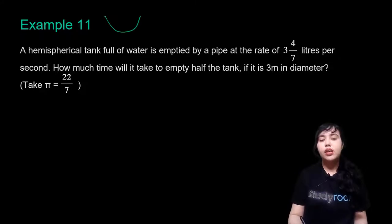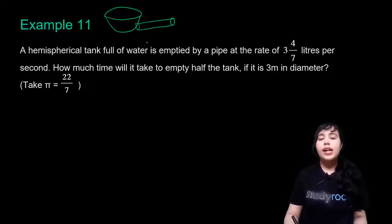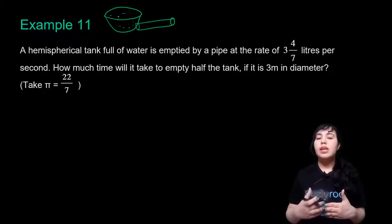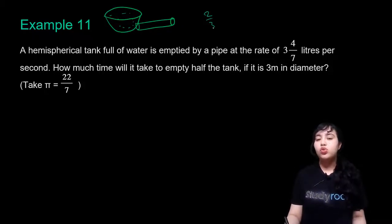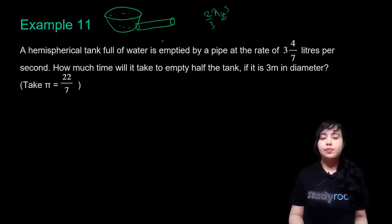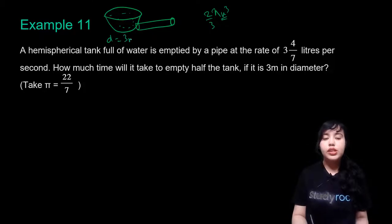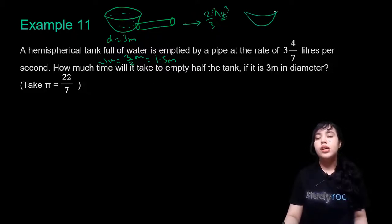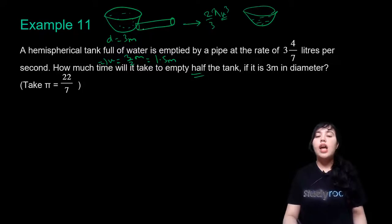We have a hemispherical tank that we are emptying using a pipe. A pipe is a cylinder. The tank is initially full of water, and we want to find how long it takes to half-empty the tank. The volume of water when full equals the volume of the hemisphere: (2/3)πr³. The diameter is 3 m, so radius = 3/2 = 1.5 m.